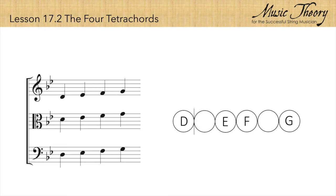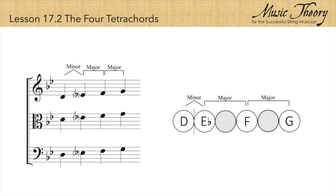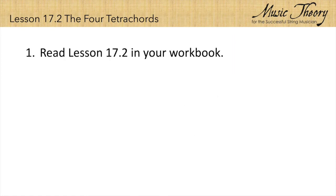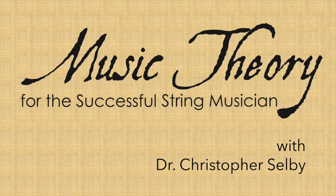Let's look at one more example. This example has two flats, and the E flat in the key signature is going to affect the E on the staff, lowering it a half step. This tetrachord begins with a minor second and is followed by two major seconds, so it is a D Phrygian tetrachord. Now read lesson 17.2 in your workbook and complete the exercises for this lesson. In the next lesson, we will introduce major and minor thirds. My name is Christopher Selby. Thank you for watching this tutorial on music theory for the successful string musician.